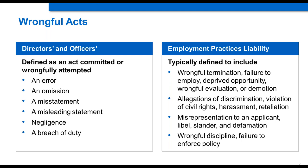Now let's contrast that with employment practices liability. With roughly 6,200 Episcopal churches insured — representing over 92% of all Episcopal churches in the United States — whereas directors and officers sees one claim in maybe a three-year period, with EPL we see 25 to 30 per year. Types of wrongful acts include wrongful termination, failure to employ or deprived opportunity, wrongful evaluation or demotion, discrimination, violation of civil rights, sexual harassment, retaliation, libel, slander, defamation, wrongful discipline, and failure to enforce policy. By far, what we see in the Episcopal Church is wrongful termination.